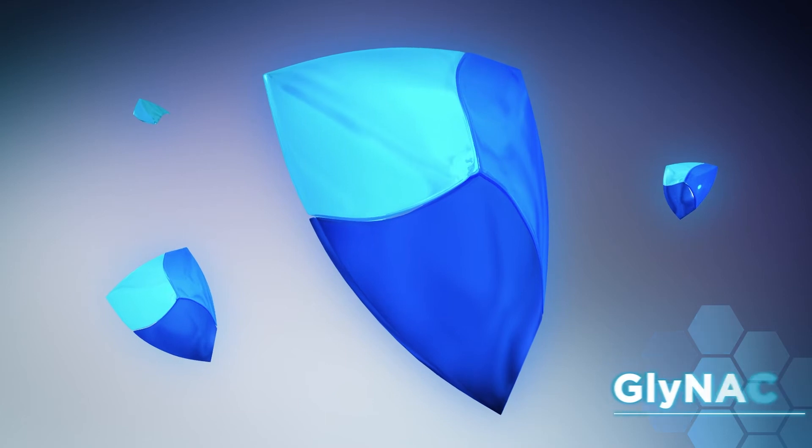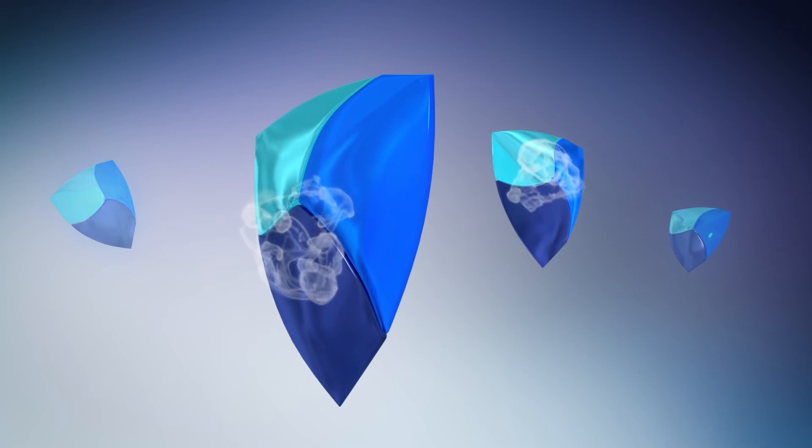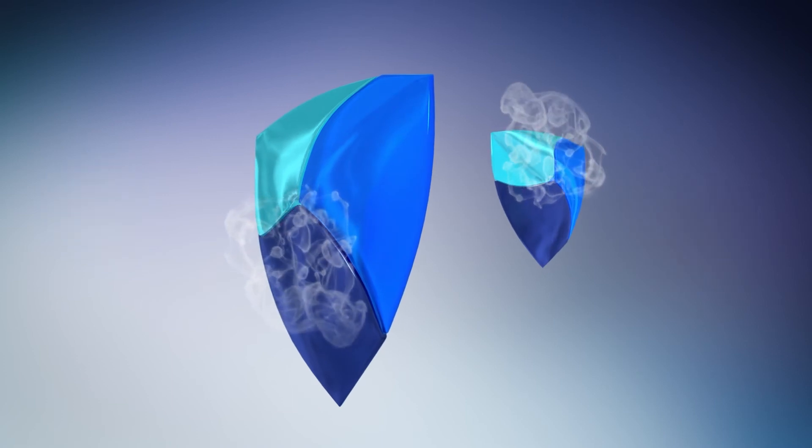Glynac is a specially balanced combination of glycine and N-acetylcysteine that can penetrate deep within your cells to deliver these two essential glutathione components.